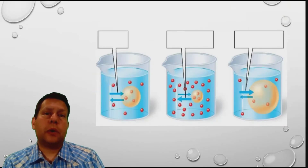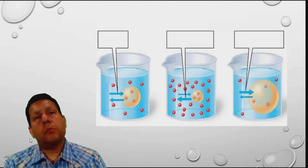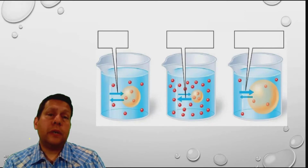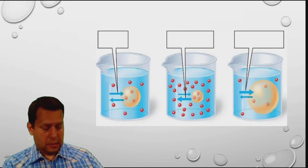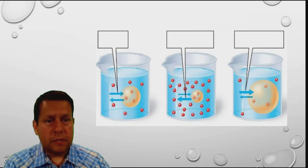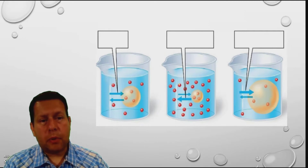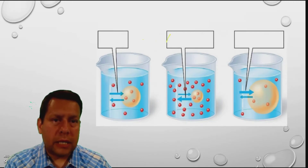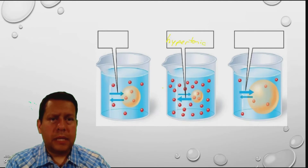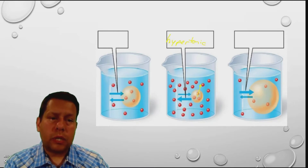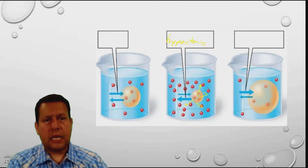Here we have three different beakers, and I want you to take a minute and see if you can figure out whether those beakers contain a hypertonic, isotonic, or hypotonic solution. The middle one is the easiest to identify: the cell in yellow has three particles inside, but there are a lot of particles surrounding the outside. Because there's a lot more on the outside, this solution is hypertonic. Hypertonic means there's more on the outside than on the inside, so water is going to go out of this cell and it is going to shrink.